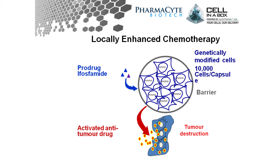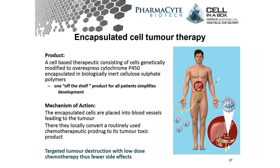The capsules house the cells in a porous shell and the drug gets in. Enzyme-expressing cells then release the activated intermediate, which finds its way into tumour cells and kills the tumour. It's a cell-based therapeutic expressing cytochrome P450 — an off-the-shelf product, one for all patients. The encapsulated cells are then put into the blood vessels leading to the tumour and the pancreas by angiography, locally converting a routinely used chemotherapeutic prodrug into its toxic form, resulting in targeted tumour destruction with low-dose chemo and fewer systemic side effects.